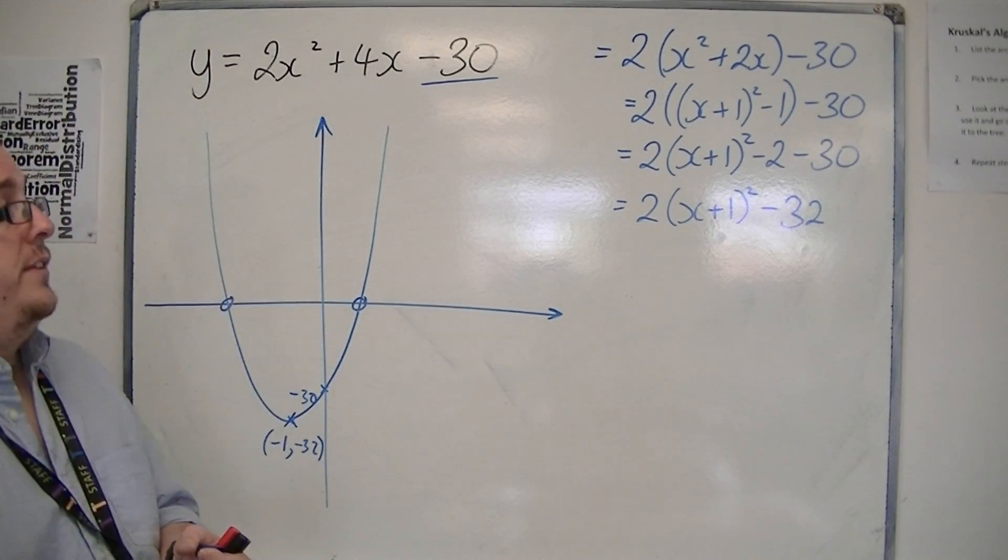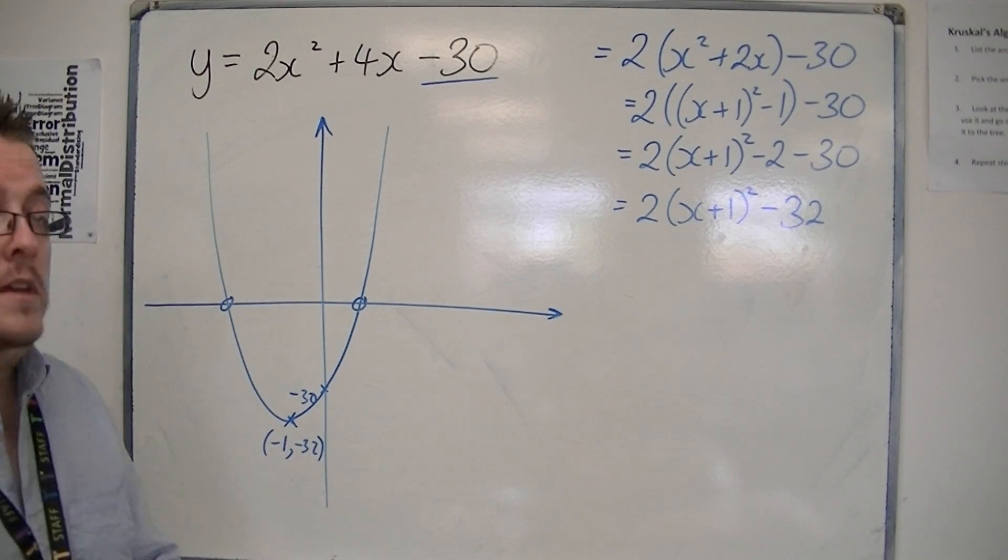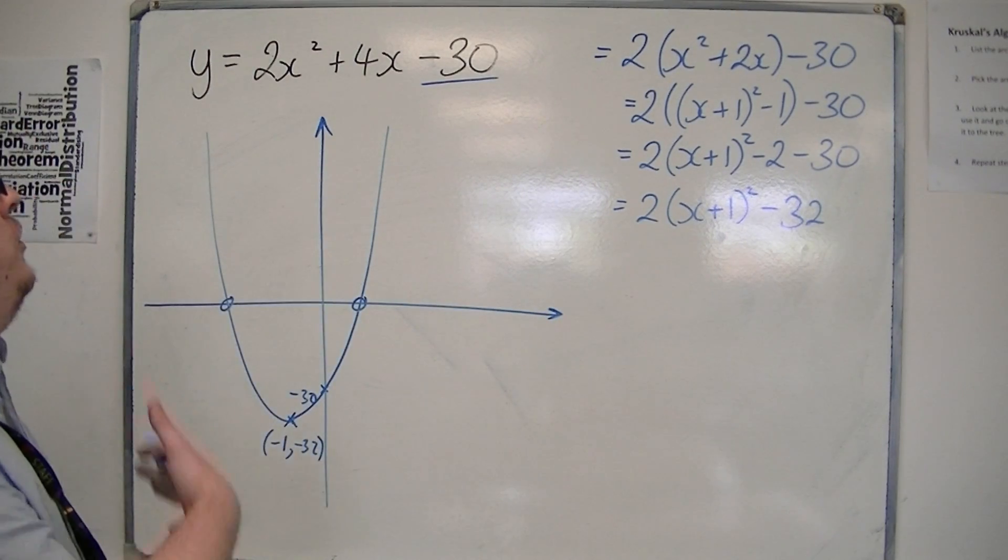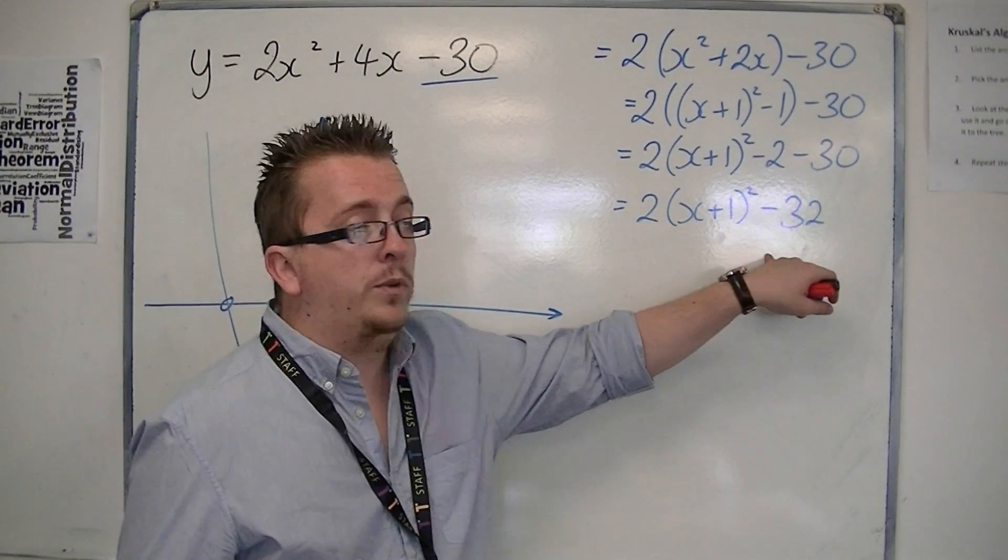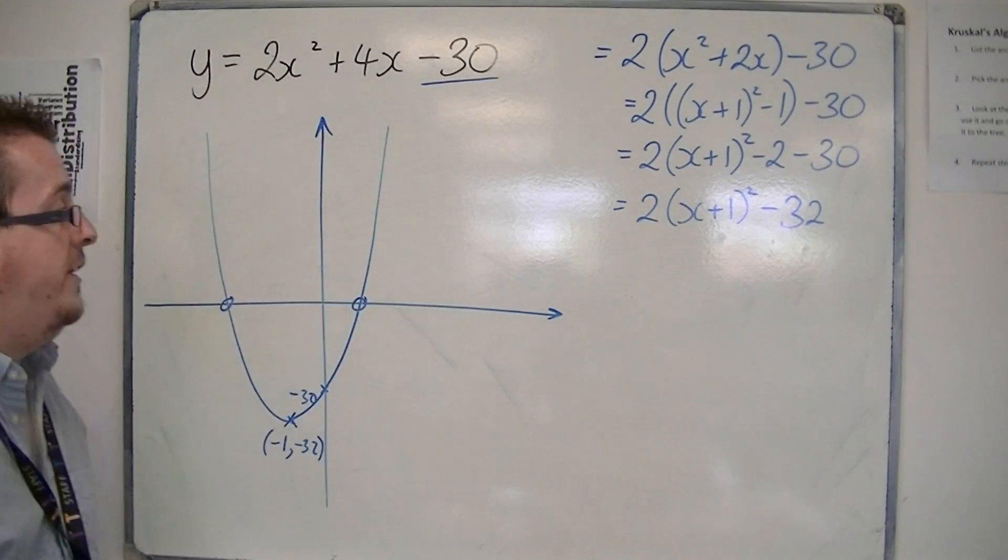I can use completing the square and solving, or I can use the quadratic formula. So if I've already completed the square, you could set this equal to 0 and solve it that way. That may well be a nice, easy way of doing it.